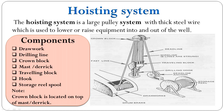For moving the hook and traveling block upward with the drill string, the drawworks reels in the drilling line using an AC or DC electric motor or by mechanical energy. On the other hand, for lowering the hook, traveling block, and drill string downward, gravity does this work — the weight of the hook, traveling block, and drill string pulls the drilling line down. The only thing required from the drawworks is to control the lowering speed.